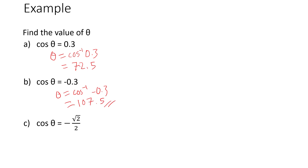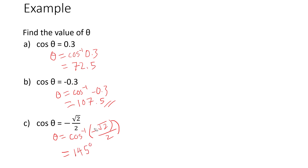For the last question, the working is completely the same — just move cosine over, so theta equals cosine inverse of negative (√2 ÷ 2), and you should get 145 degrees. That's how easy this is — you just move the cosine over and use your calculator to do the rest.